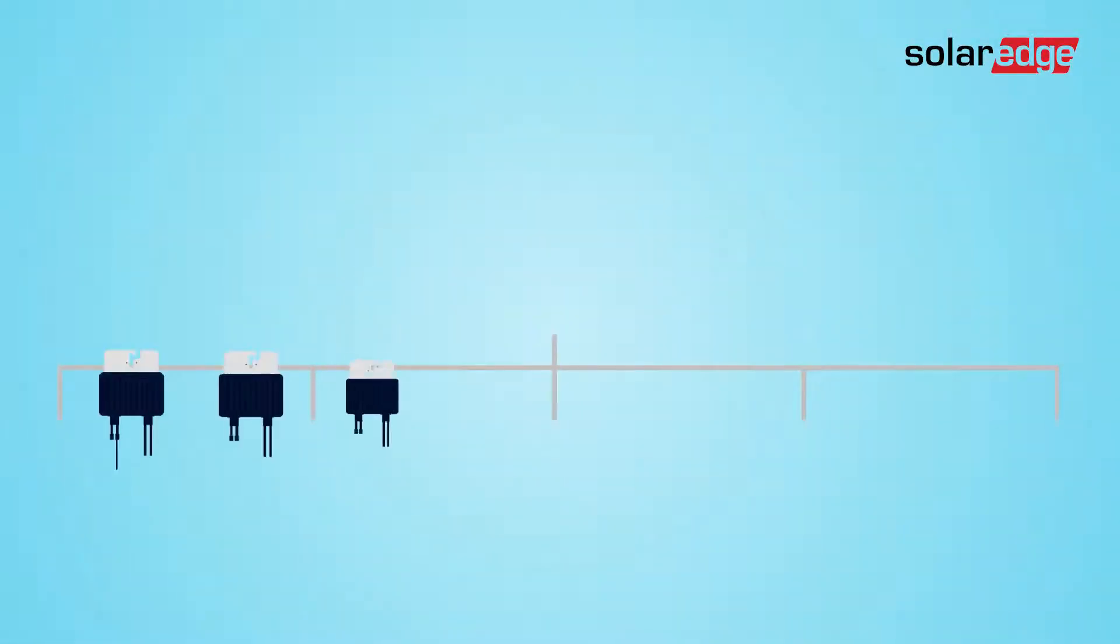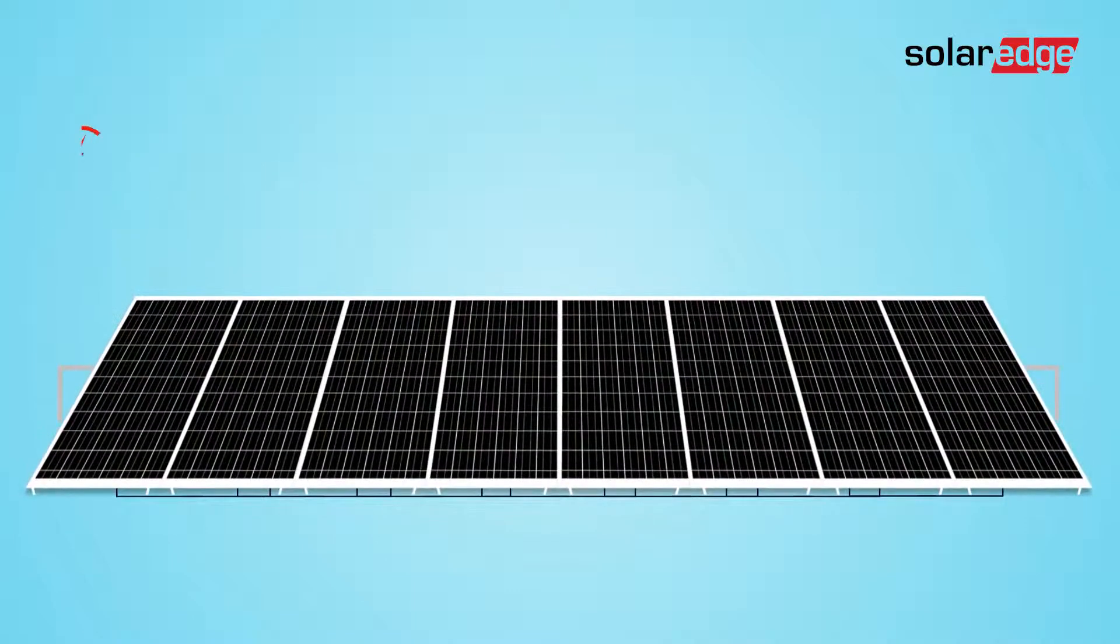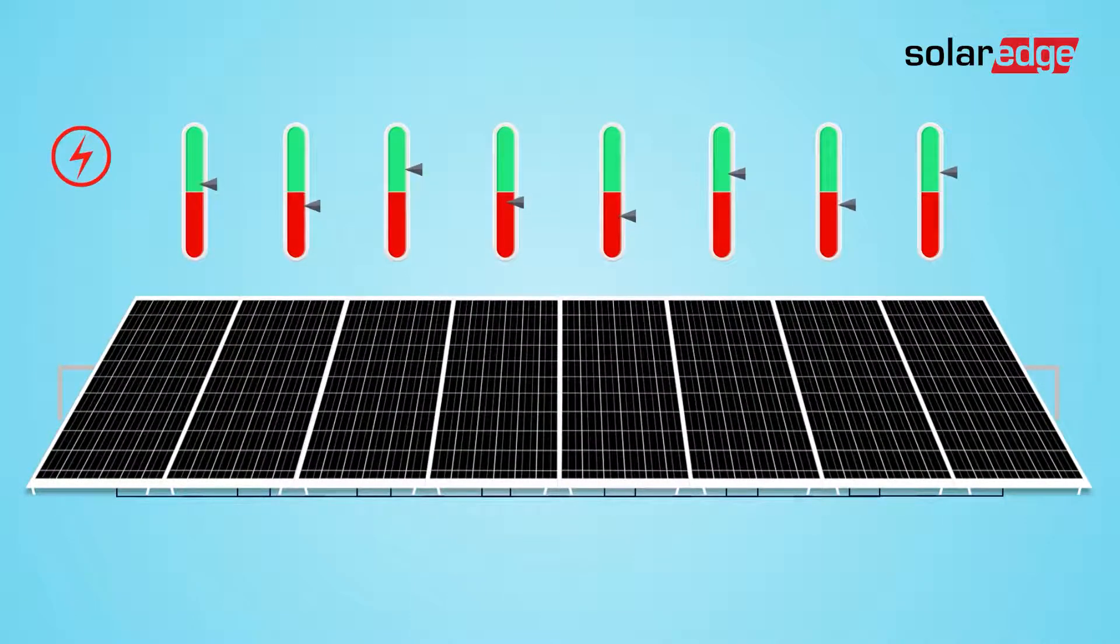Here's how it works. The power optimizer is connected via cables to each module in the solar array, maximizing energy production of each individual module.